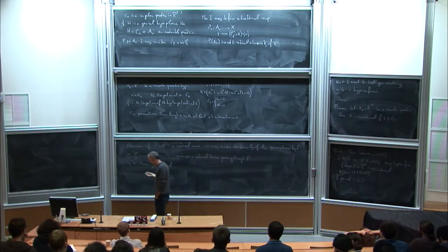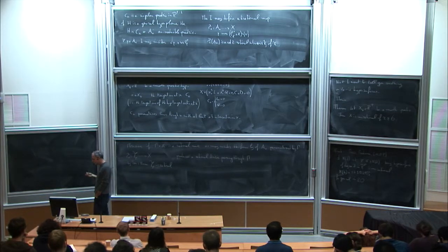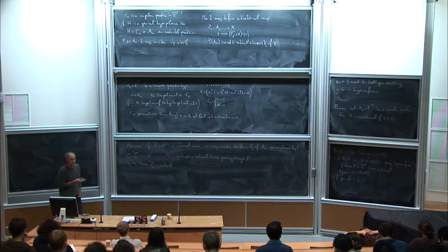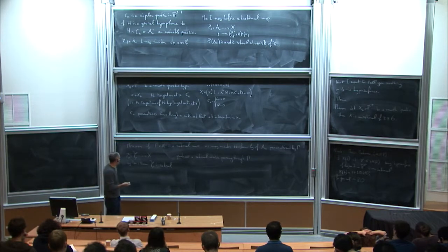Actually, A(x) is a degree-8 rational surface with a six-tuple point in x in general, for the general A(x).